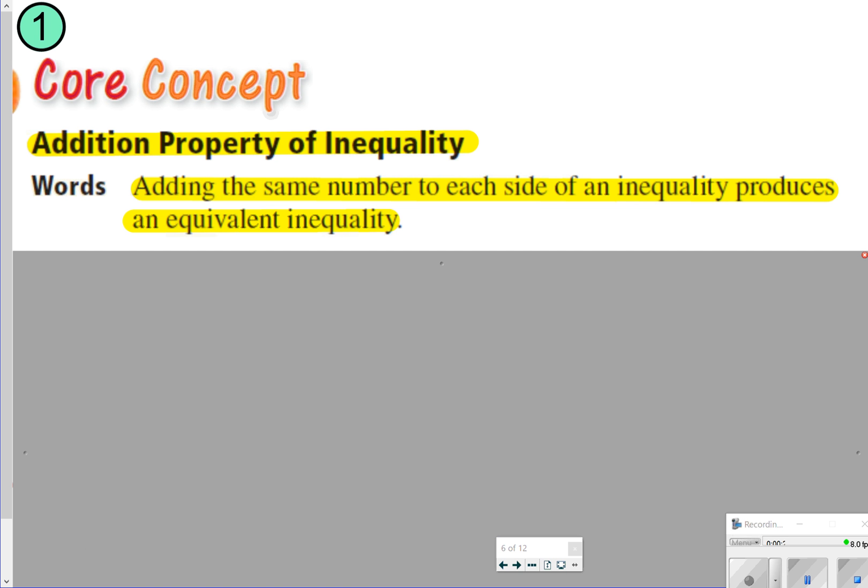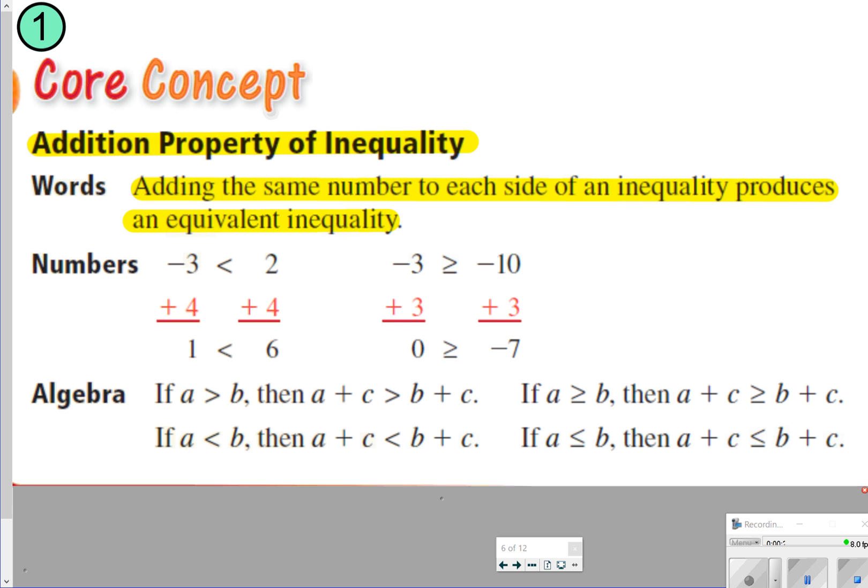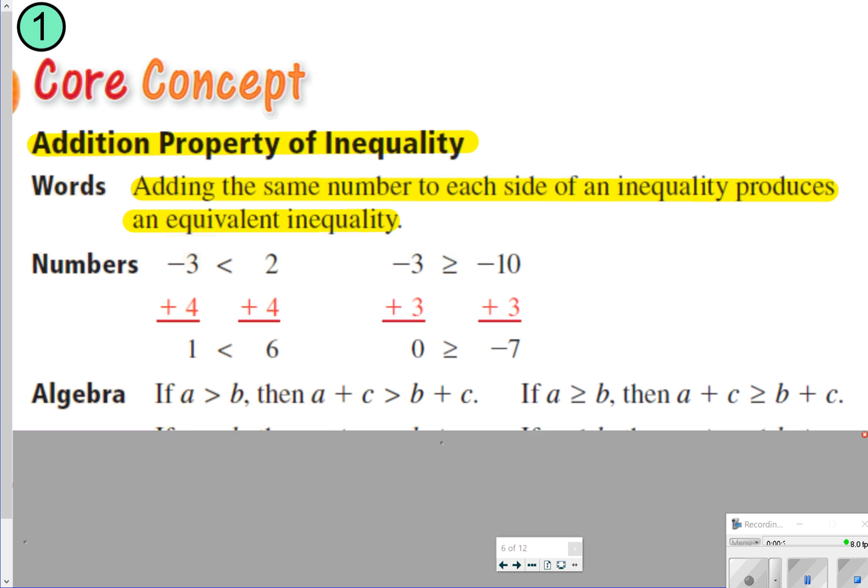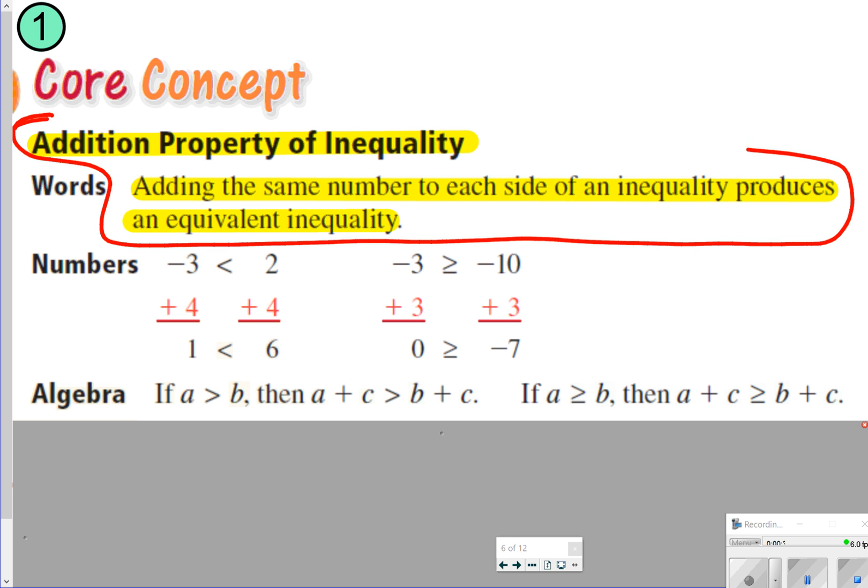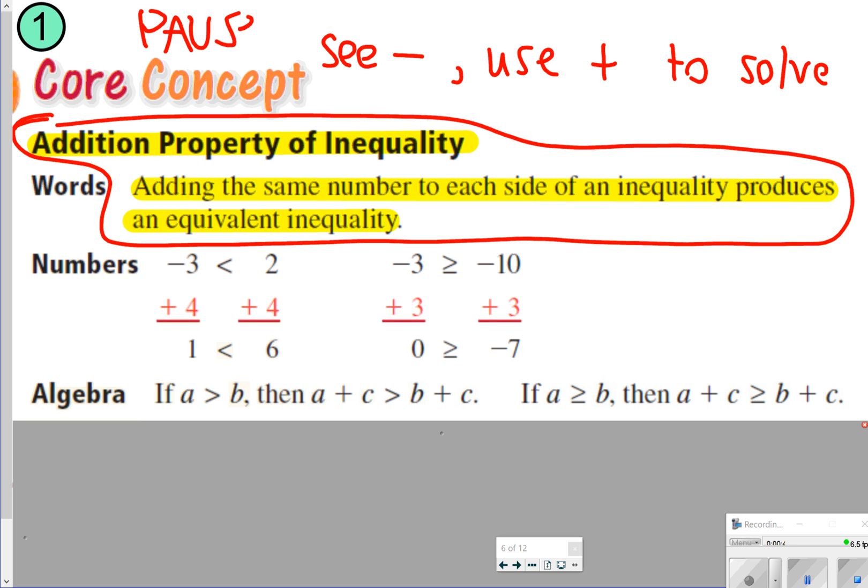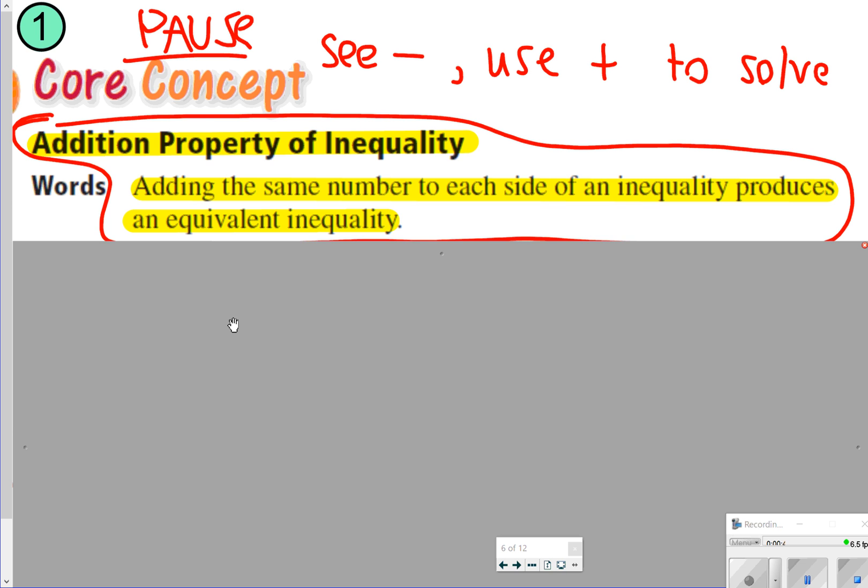First thing we're going to write down is the addition property of inequality, and that just means adding the same number to each side of an inequality produces an equivalent inequality. These are just some examples, but you basically just need to write down what is highlighted. This just essentially says if we see subtraction, we're going to use addition to solve. Go ahead and take time now to pause the video here so you can write down what's highlighted, and once you're done, click play.